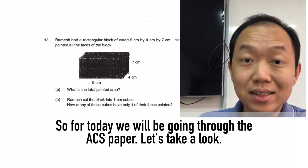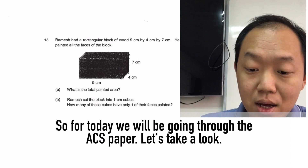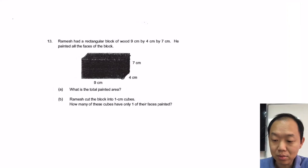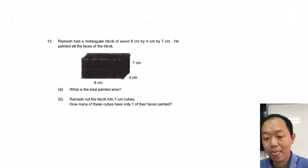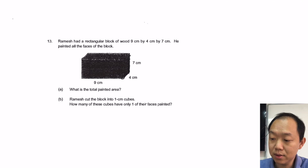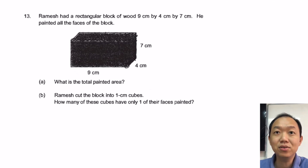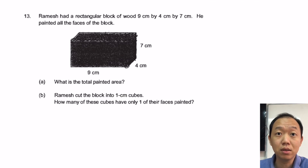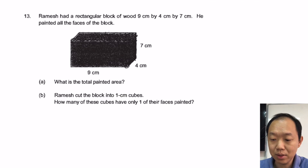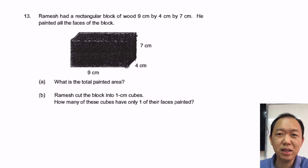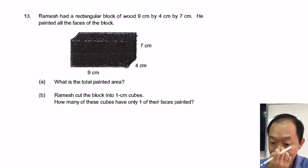So for today, we'll be going through the ACS paper. Let's take a look and see what we have over here. So Ramesh had a rectangular block. He painted all the faces of the block. Now these questions, I don't remember seeing them, so it will be something like the first time that I'm looking at them as well. Sometimes I might have seen them, but most of the time I forget. So I'm just doing them as per whatever I can remember.